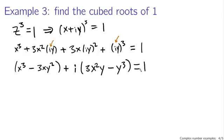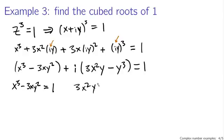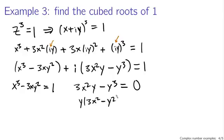This also has to equal one. In order for this complex number to equal one, both the real parts and the imaginary parts must be equal. So we write two separate equations: x cubed minus 3xy² equals one (real part equals real part), and 3x²y minus y³ equals zero (imaginary part equals zero). The second equation is pretty easy to work with — we can factor out y, giving y times (3x² minus y²) equals zero.